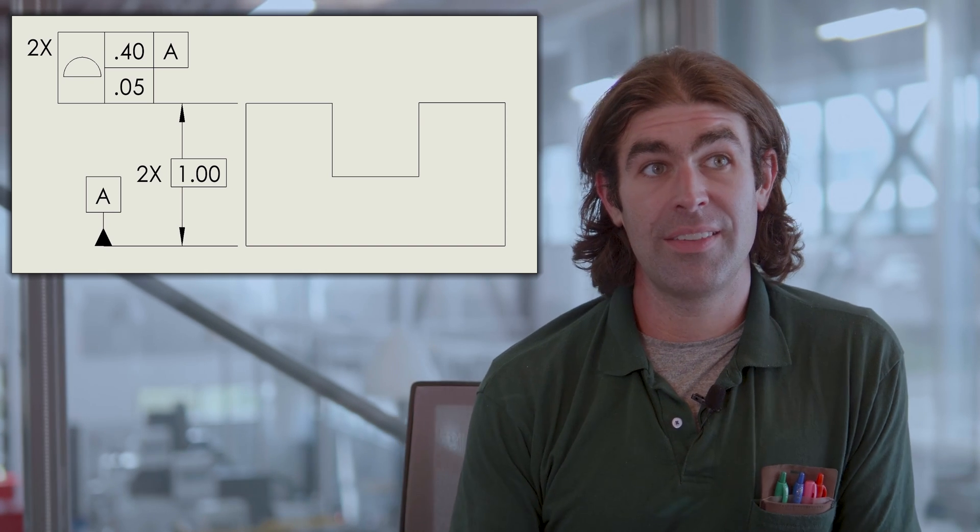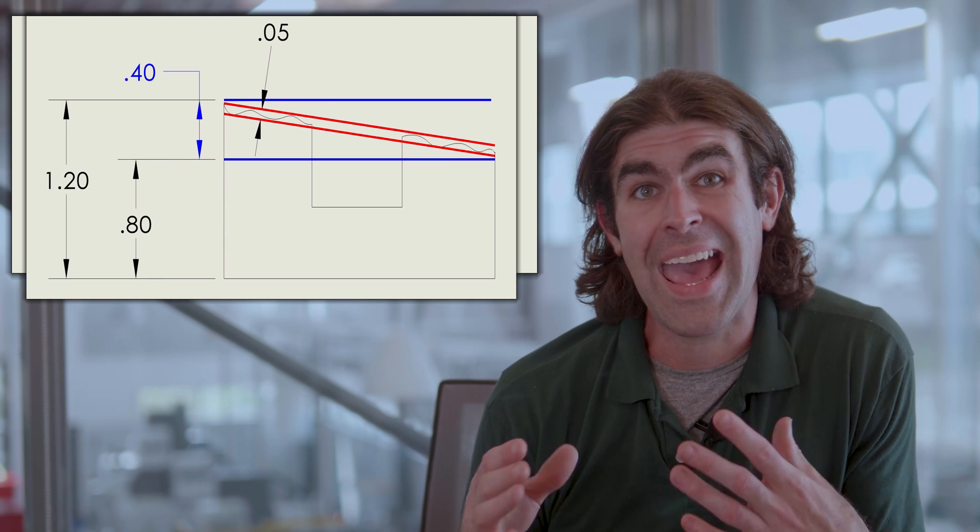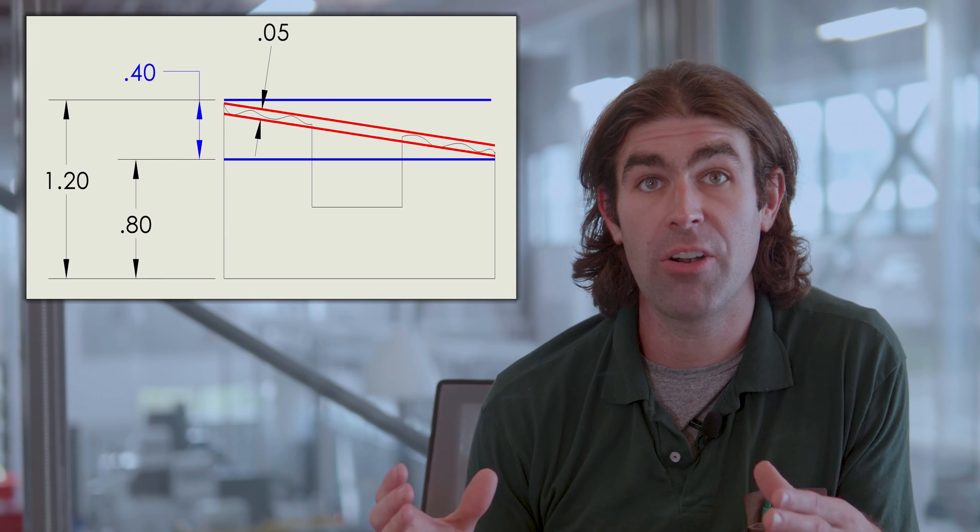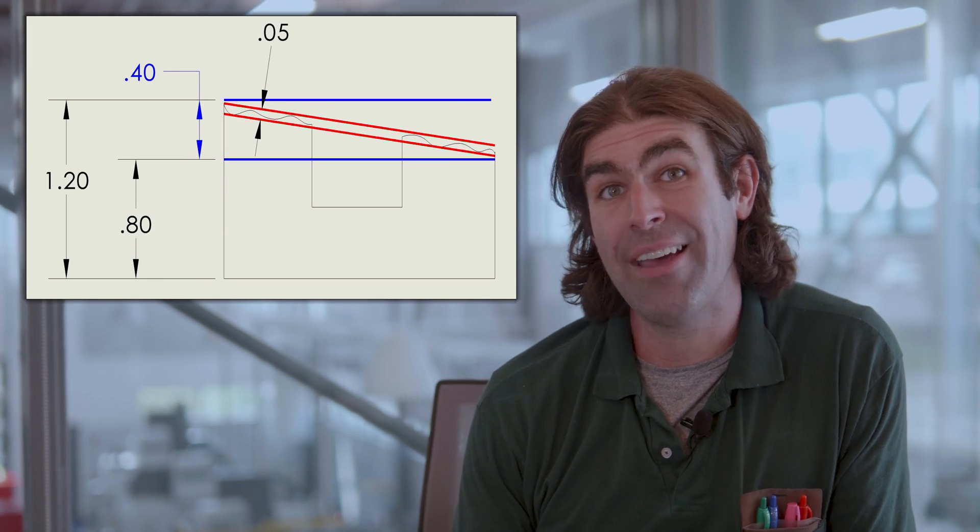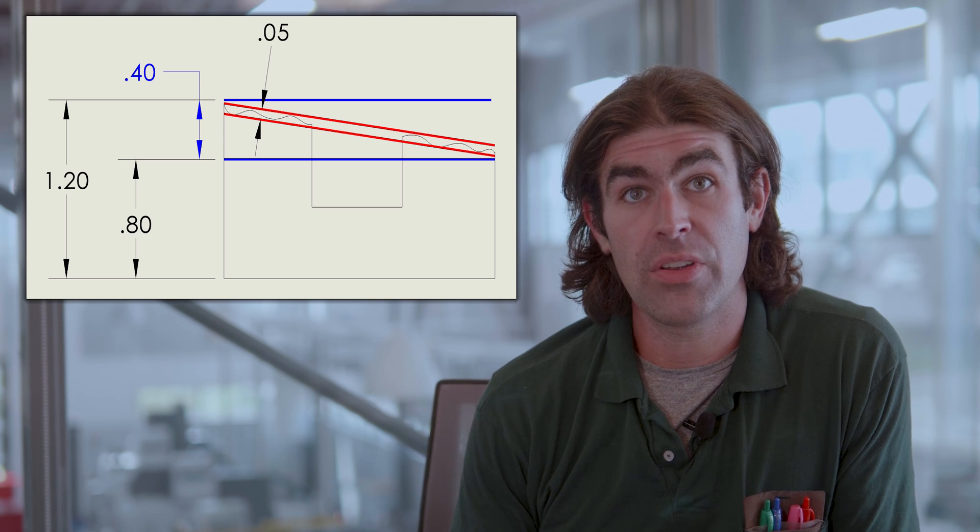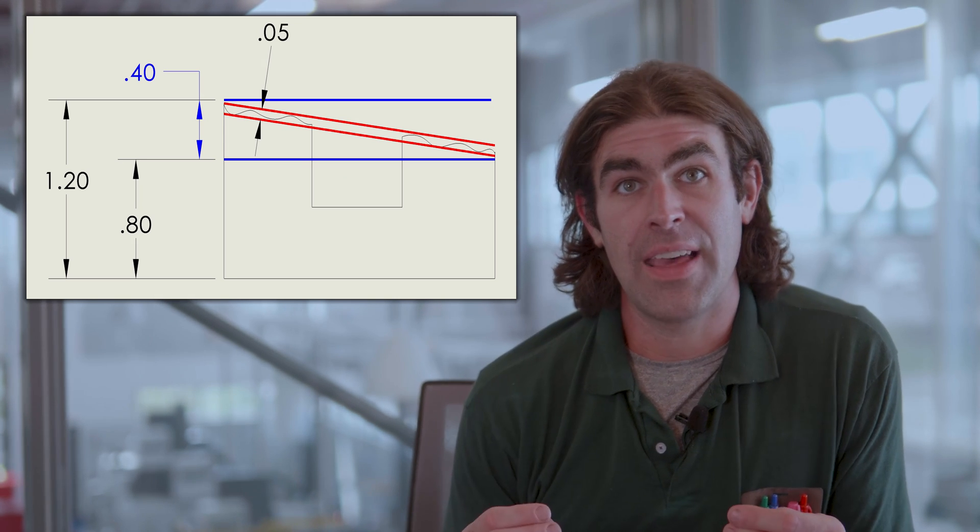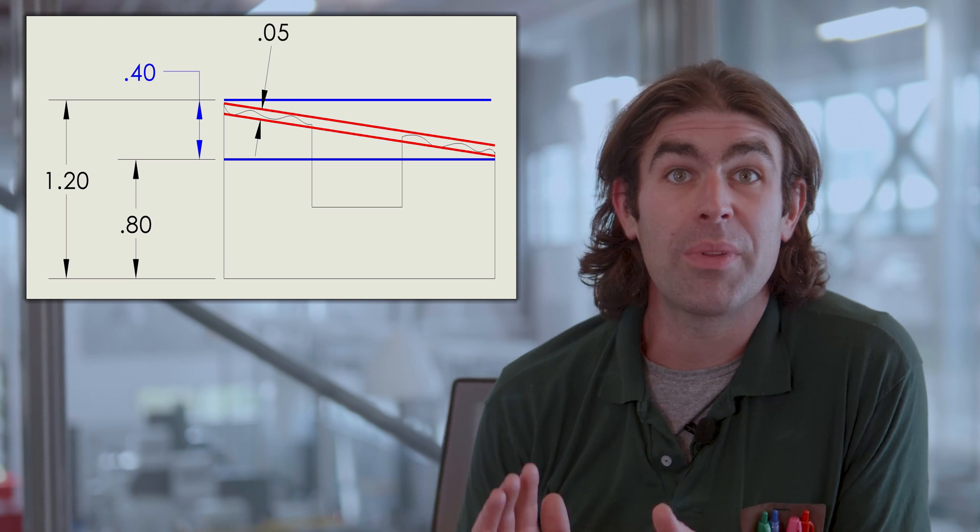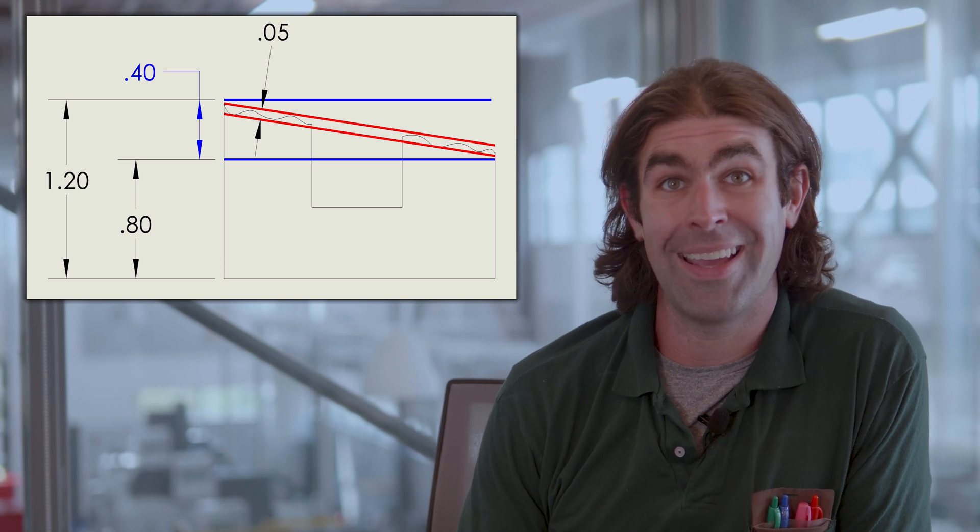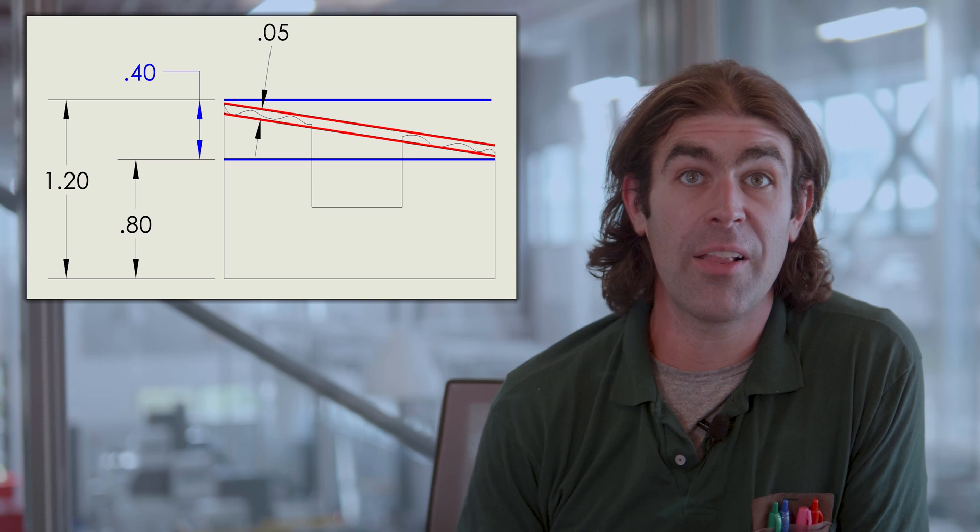What this means is that both surfaces have to be within that wider tolerance, but they have to be coplanar to each other and then flat within that 50 thousandths. So it accomplishes something very similar to applying a dimension with the tolerance and then just applying a profile to control the coplanarity.